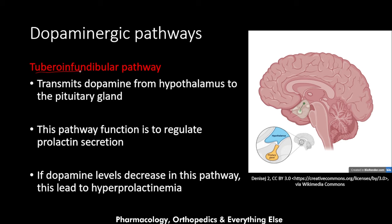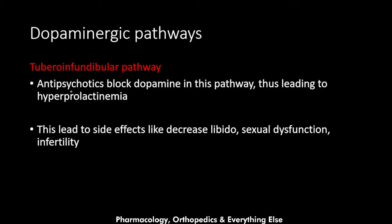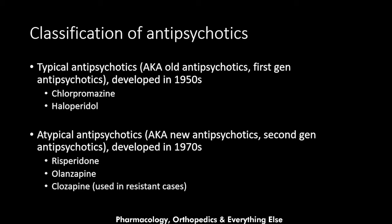The final pathway is the tuberoinfundibular pathway, which transmits dopamine from the hypothalamus to the pituitary gland. Its function is to regulate prolactin secretion. If dopamine levels decrease in this pathway, this leads to hyperprolactinemia. Antipsychotics block dopamine in this pathway, leading to hyperprolactinemia and associated side effects like decreased libido, sexual dysfunction, and infertility.